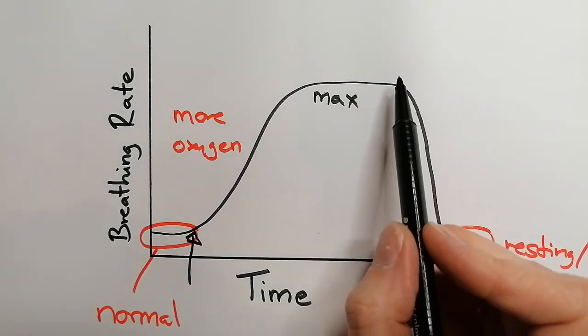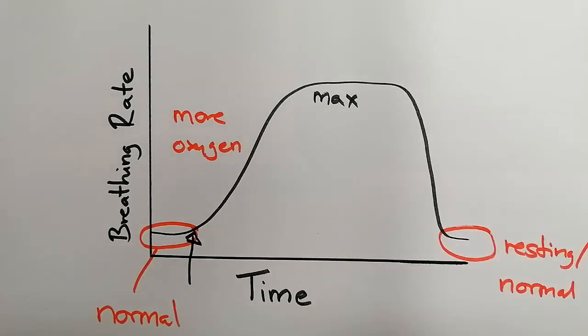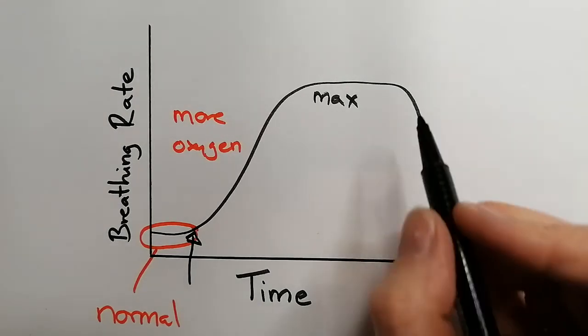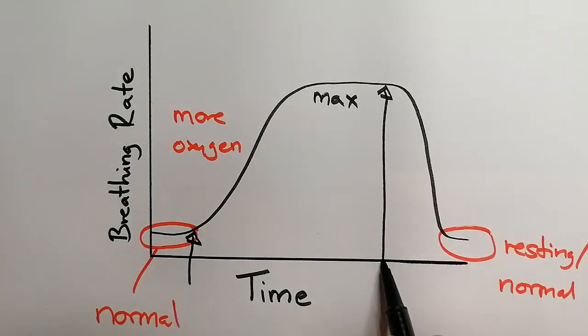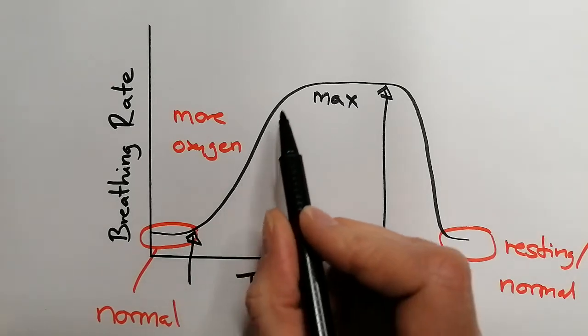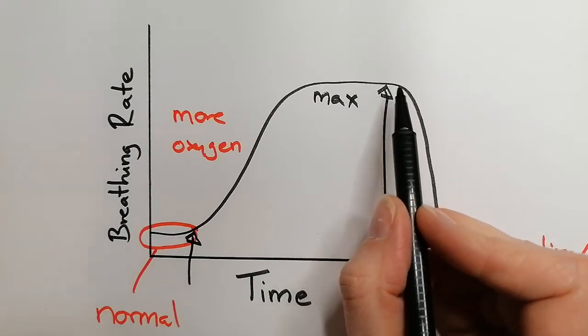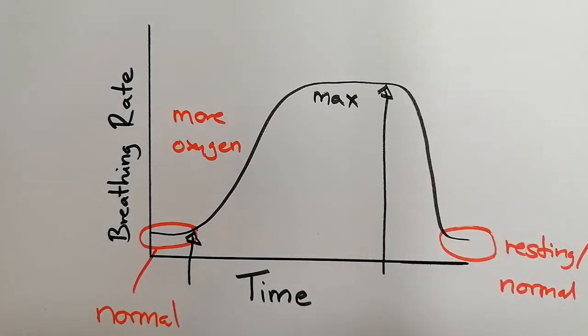Now you would think that the point where it starts to go down is when we've stopped exercising. But actually, you'll probably find if you look carefully at the graph that you've been given for an exam question, it's usually slightly before. So the exercise will start here, just at the point at which it starts to go up, and then the exercise will stop a little bit before it starts to go down.